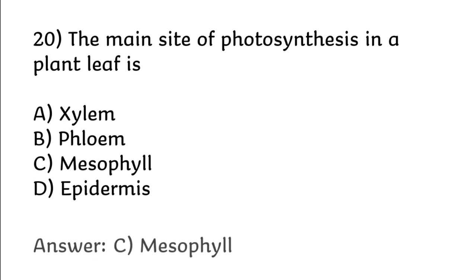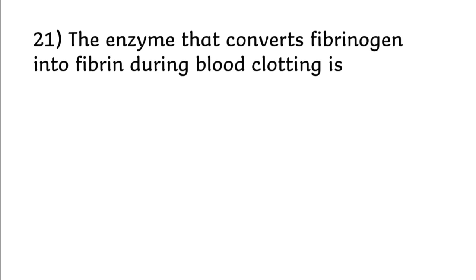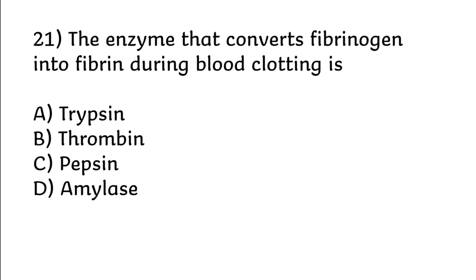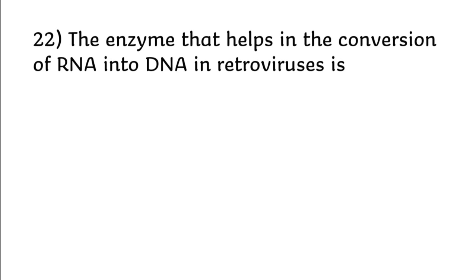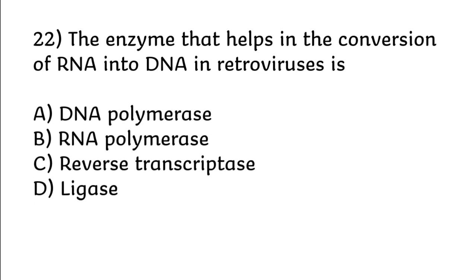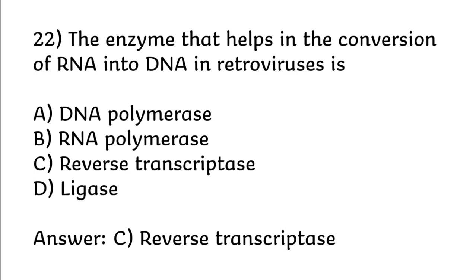Correct answer is option C: mesophyll. The enzyme that converts fibrinogen into fibrin during blood clotting is: trypsin, thrombin, pepsin, amylase. Correct answer is option B: thrombin. The enzyme that helps in the conversion of RNA into DNA in retroviruses is: DNA polymerase, RNA polymerase, reverse transcriptase, ligase. Correct answer is option C: reverse transcriptase.